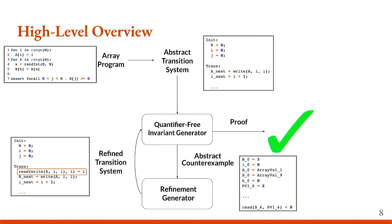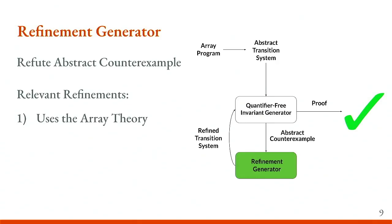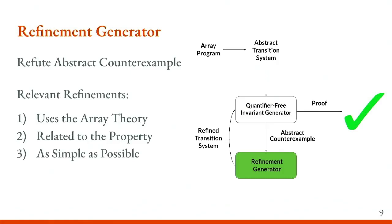How does the refinement generator work? It works by refuting the abstract counterexample — showing that the value we've gotten is impossible if we apply the array theory correctly. We refute it by finding relevant refinements: one that uses the array theory, one that's related to the property so it gets us toward a proof, and one that's as simple as possible. We don't want to add a bunch of auxiliary variables and axiom instantiations that don't matter and won't generalize to a proof.